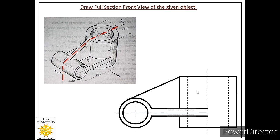Now we convert this front view into a full sectioned view by cutting the object along its center line. We first check for openings: there are two openings — one here and one here. Both openings are cut by the cutting plane, so we convert the dashed medium lines of those openings into thick lines. When we cut this hole, its edges become visible and we convert the dashed lines to continuous thick lines.